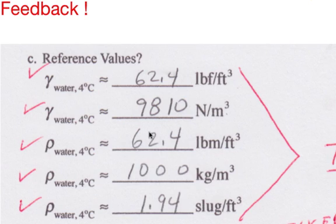Second, memorize that the density of water is 62.4 pounds mass per cubic foot. Once you know that, then you also know the specific weight, 62.4 pounds force per cubic foot. So, you only really have to remember one thing here.